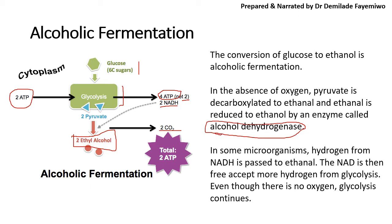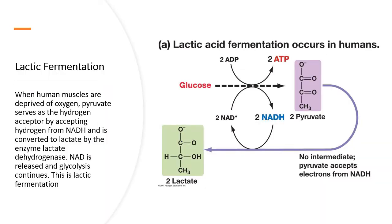So always remember: you have glycolysis, you form pyruvate, pyruvate goes first to ethanal, and ethanal is then reduced by the addition of hydrogen from NADH to form ethanol. The total ATP that you make is just two, which tells you that with fermentation, the energy yield is not that great.